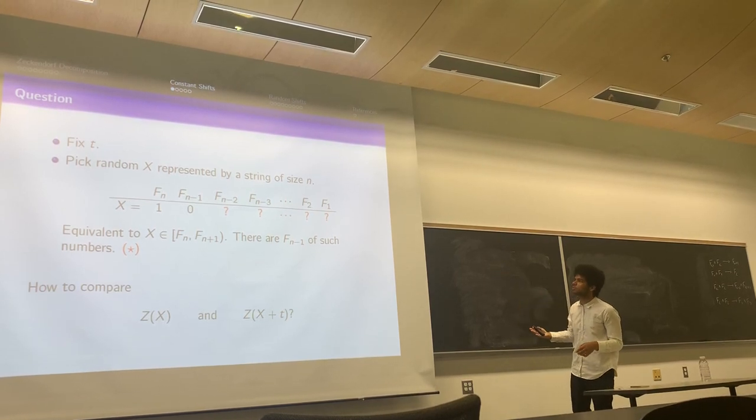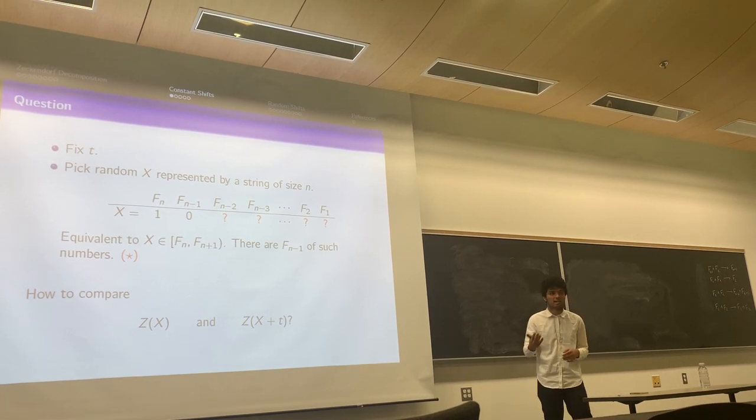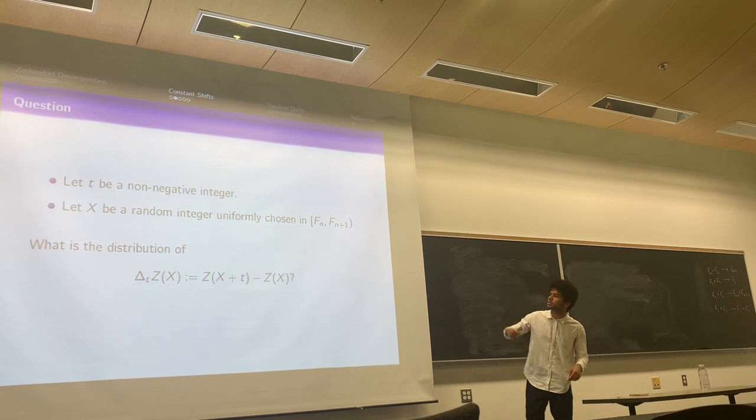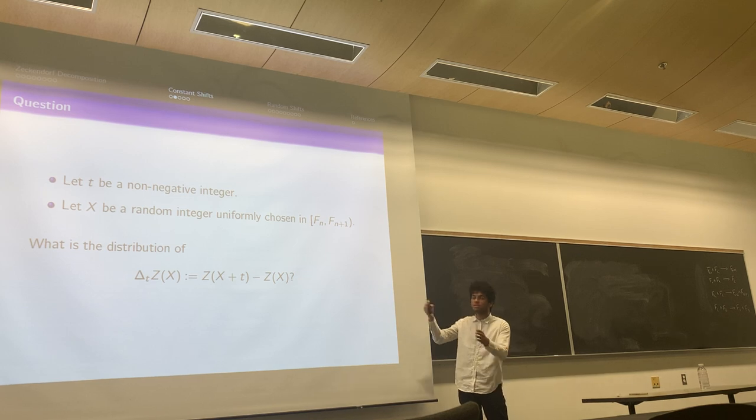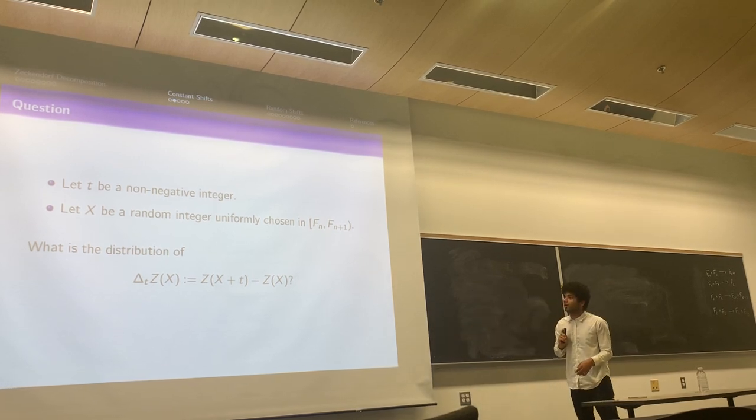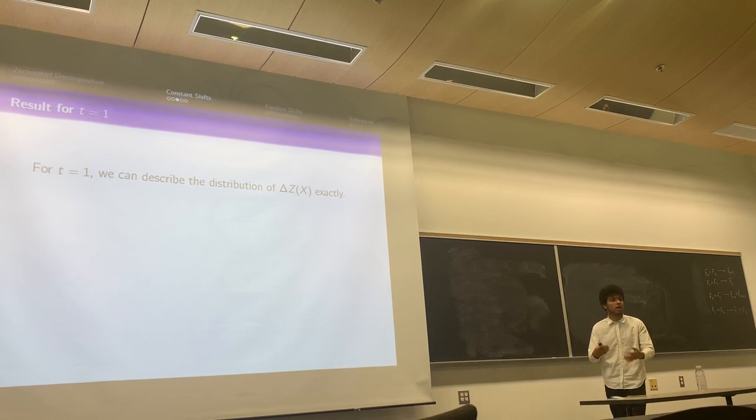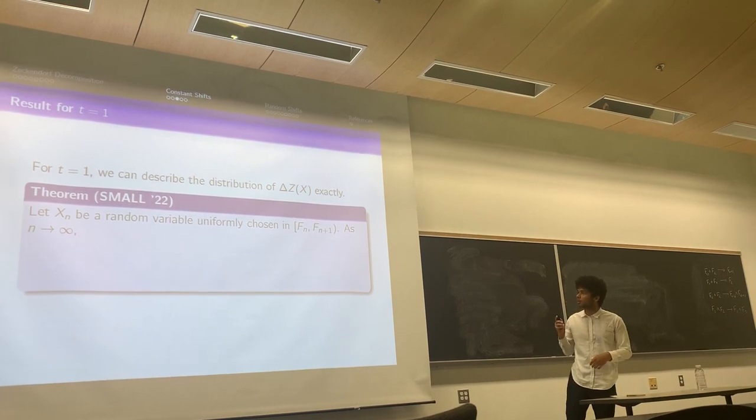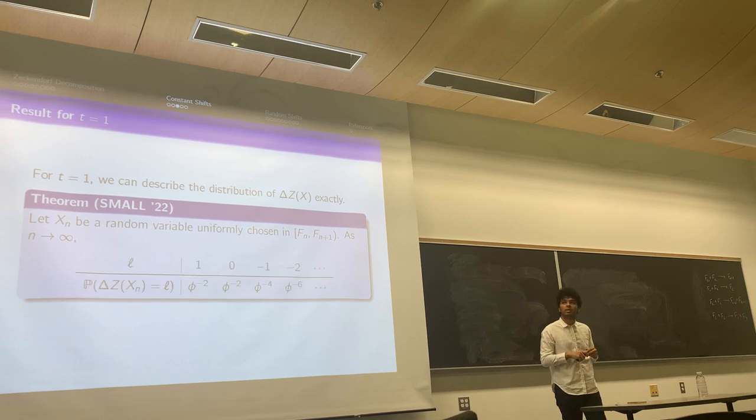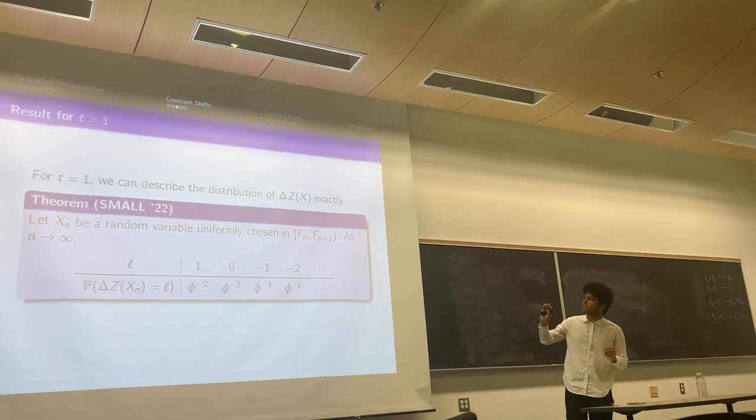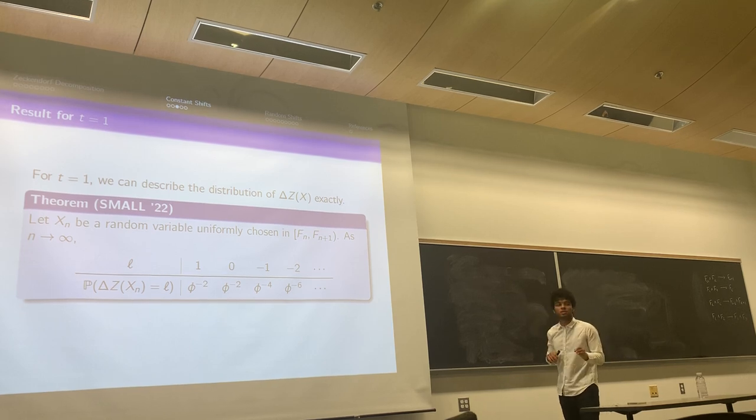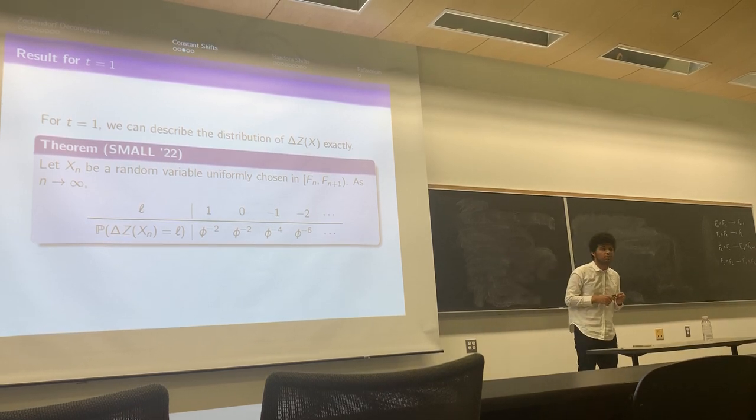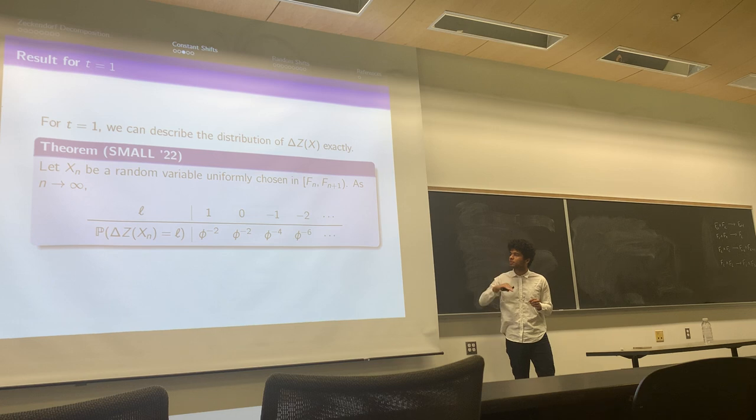We have this fixed T and we pick this random x. How do we compare the numbers of summands in x and the numbers of summands in x+T? Or in other words, what is the distribution of this ΔT(x), where's the difference of those? For T equals one, we have proved how to describe this distribution exactly. We pick Xₙ to be a variable uniformly chosen between Fₙ and Fₙ₊₁. What happens is that the probability that this number is one is going to be φ⁻², φ⁻² again, and then after that it's going to be a geometric series of ratio φ⁻². So at each time you get φ⁻⁴, φ⁻⁶, and so on.